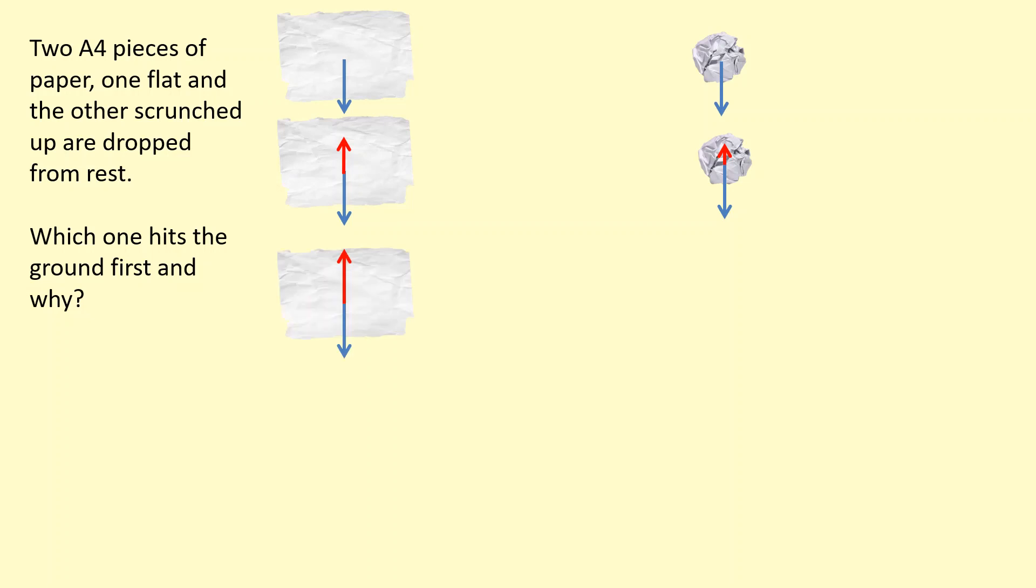As they start to fall, you see that the weight of the flat piece of paper is balanced first. So this one now has reached its terminal velocity, so it's not going to accelerate anymore.